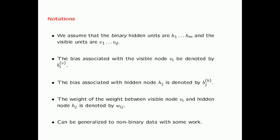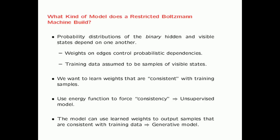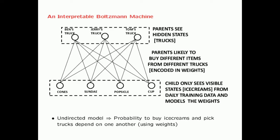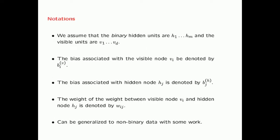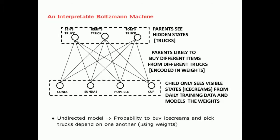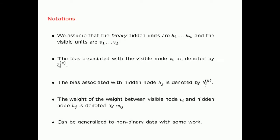Let's introduce some notation. The binary hidden units are denoted H1 through H_M, where M is the number of hidden units—in this example M is 3 because there are three types of trucks. The visible states are denoted V1 through V_D, where D is the dimensionality of the training data, also equal to the number of visible states. Here the visible states correspond to the different types of ice creams, with D equal to 4.